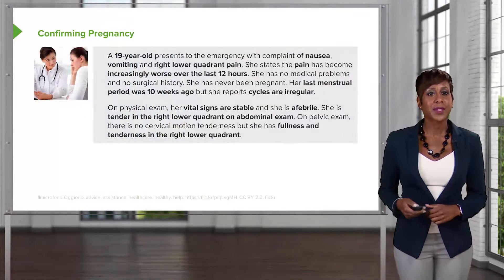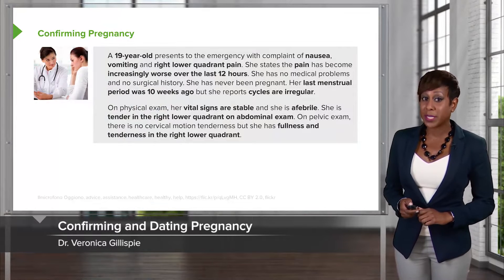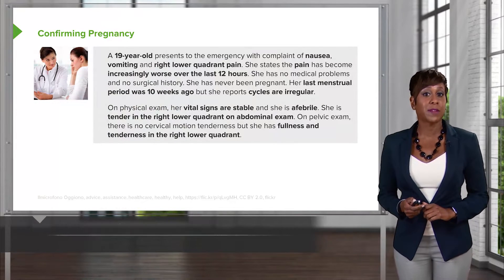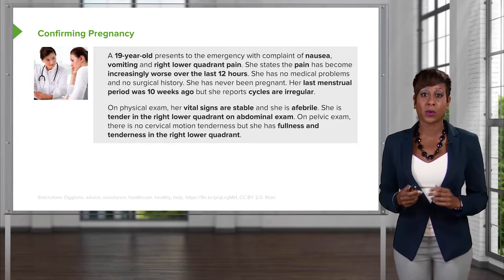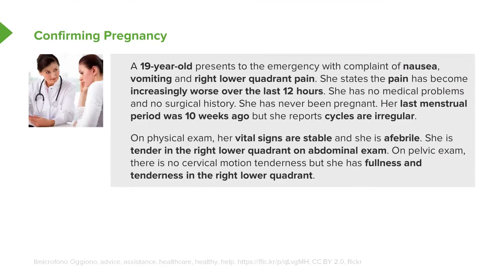Let's now talk about confirming and dating pregnancy. Here's a case. A 19-year-old presents to the emergency room with complaint of nausea, vomiting, and right lower quadrant pain. She states the pain has become increasingly worse over the last 12 hours. She has no medical problems and no surgical history.